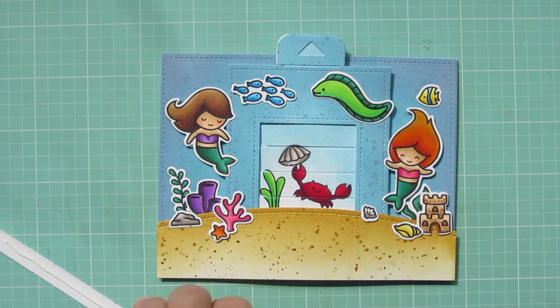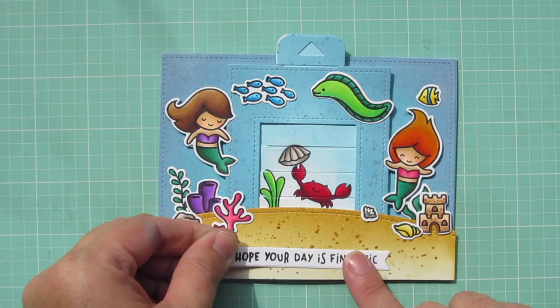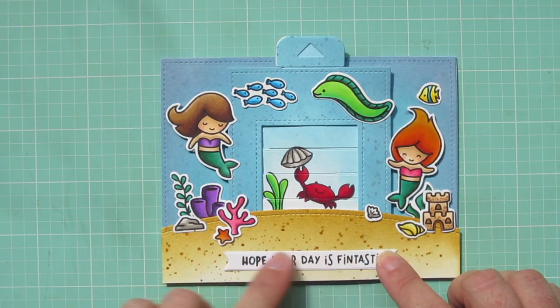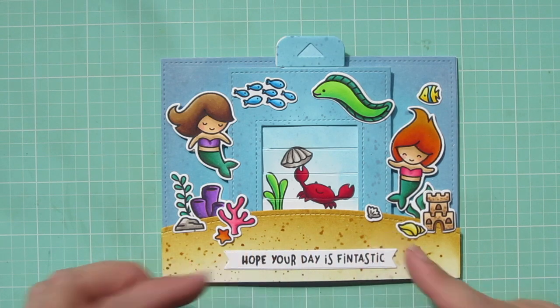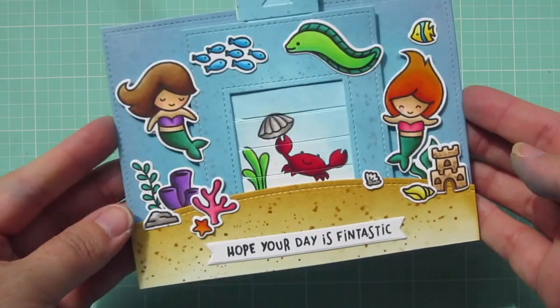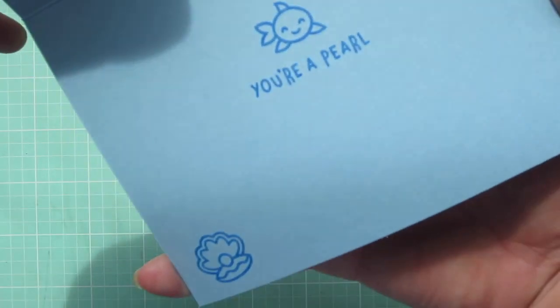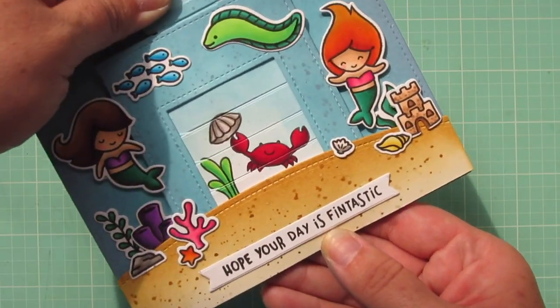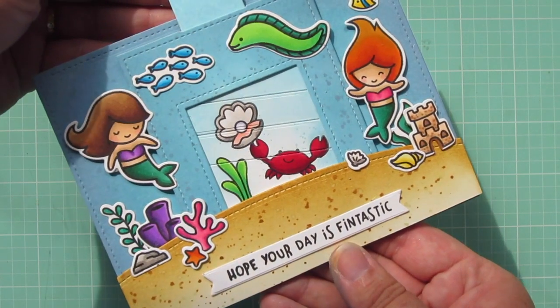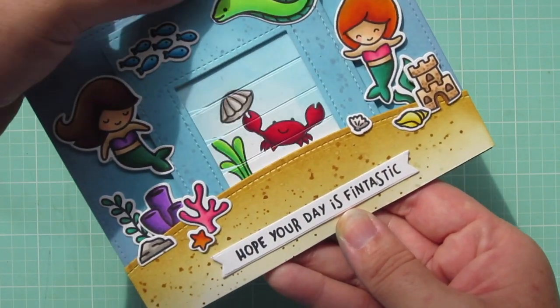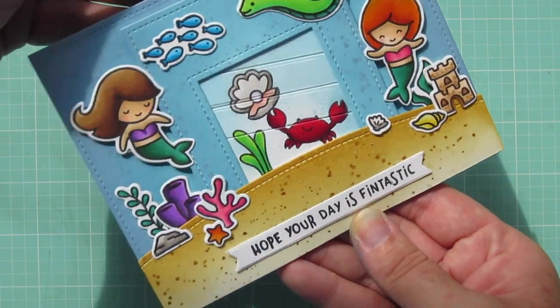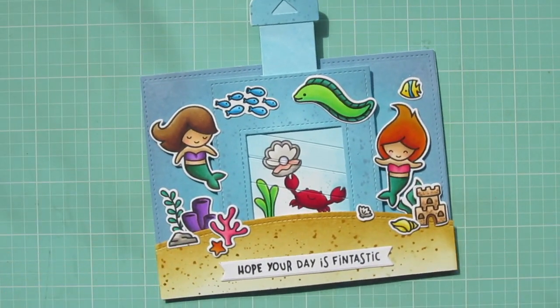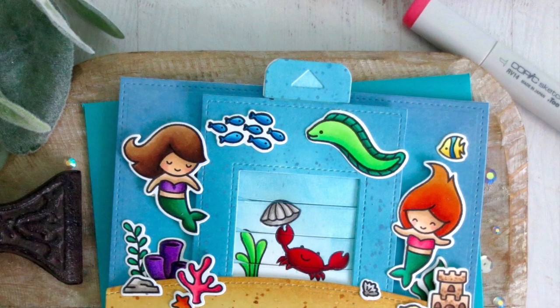So all that's left is to adhere my sentiment. Which I trimmed down with a Lawn Fawn Everyday Sentiments banner. And I'm just going to add that with some liquid glue. And make sure that it's nice and straight on the card. And that is going to complete my card for today. There's another peek at the inside. And I'll show you again how that mechanism works. I think this is a super fun die set to have in your arsenal. I love how it makes it look like the crab is holding that clamshell. Which is opening to reveal that pearl inside.